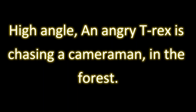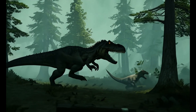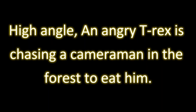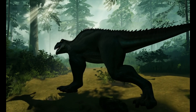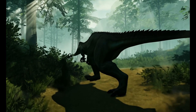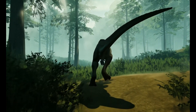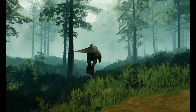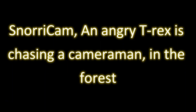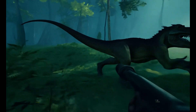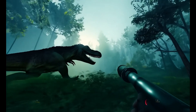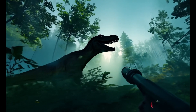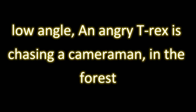High angle camera movement with the same prompt — the dinosaurs look like they're chasing something or someone, but it's just another repeat. We see a shadow jumping and good video quality, but still no cameraman. Using a 'Noricam' style with the same prompt, now I see a man with a gun and the dinosaur realizes it needs to run.